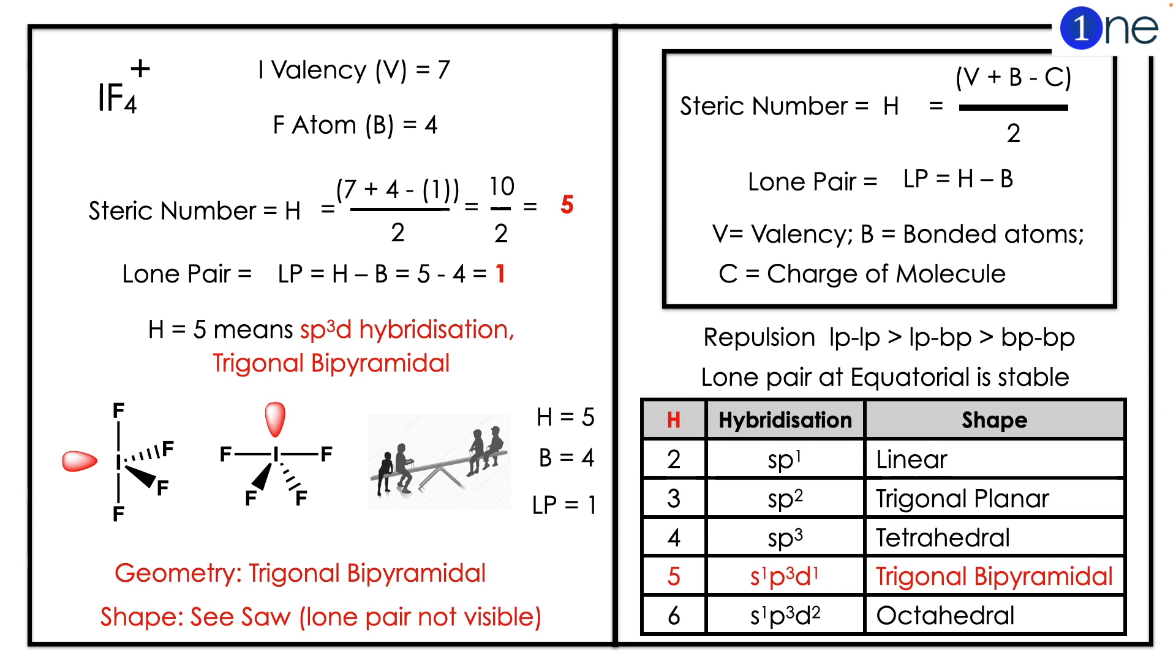To find the hybridization, you should know the steric number. Steric number is H equals V plus B minus C, whole divided by 2. Here iodine valence is 7, fluorine is 4, so you have 7 plus 4 minus 1.